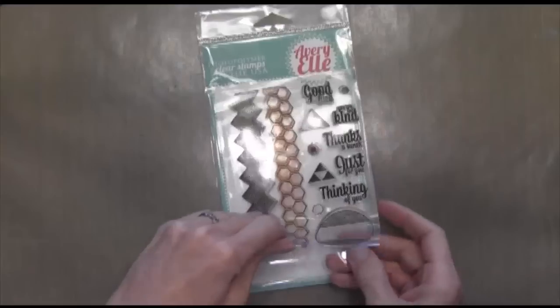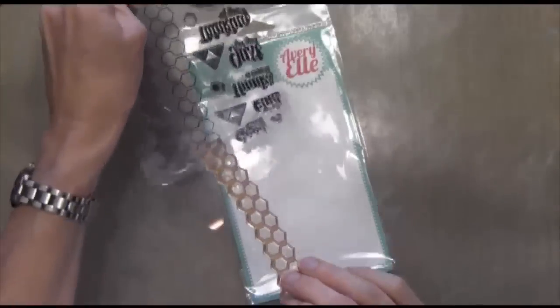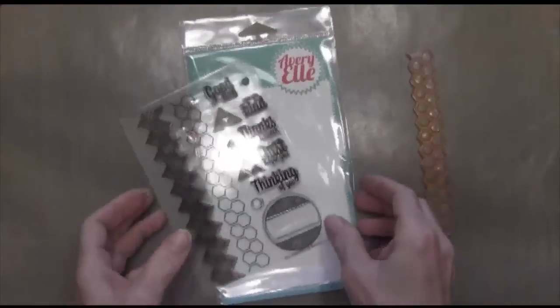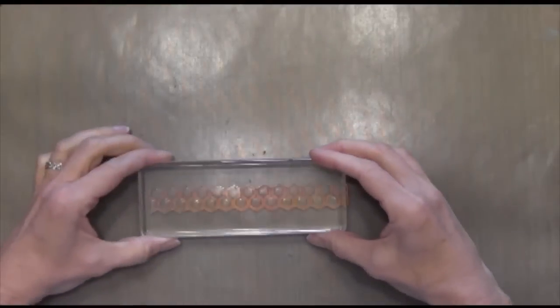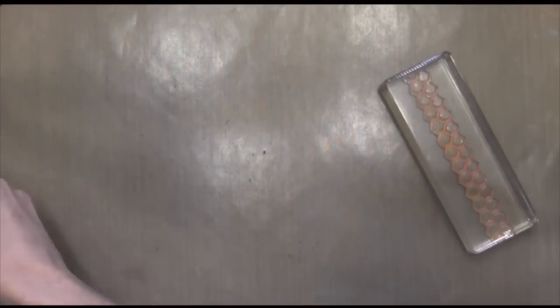First thing I'm going to do is take that honeycomb looking stamp and adhere it to my block. Because I'm going to be stamping this several times in a row and I want it to be lined up, I'm going to be using my stamp-o-ma-jig.